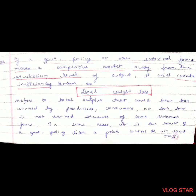Question 2: If a government policy or other external forces move a competitive market away from the equilibrium level of output, it will create inefficiency known as deadweight loss. In a competitive market, marginal cost is equal to price — the firm charges a price equal to its marginal cost, which is very low. Moving away from the competitive market creates deadweight loss.